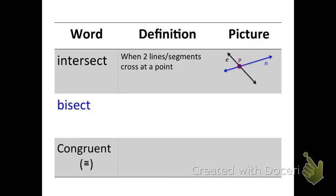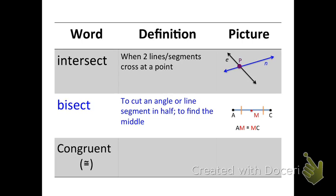The next word is bisect. Bisect means to cut an angle or line segment in half, or to find the middle. And remember, we used this picture for our midpoint. Well, that's the same thing that we're going to use for bisect, because bisect is just the verb form. We're going to take a line, and we're going to draw a line straight through. That red line segment bisected AC. So, it cut AC in half. And it cut AC in half at point M. So, the red line segment bisected AC at midpoint M. Again, a lot of words that we're going to be putting together, which don't make much sense now, but the more you work with them, the easier they will be.